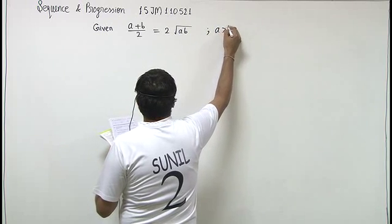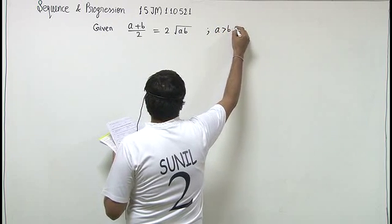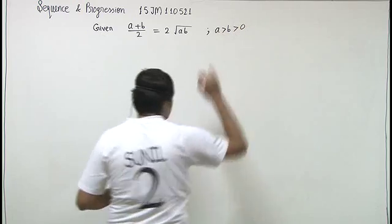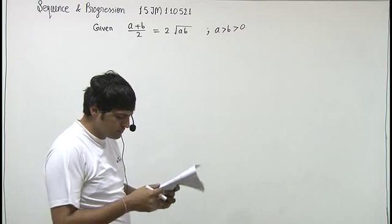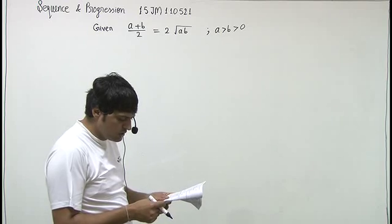A is greater than B, and both are positive. Now we have to find the ratio A is to B.